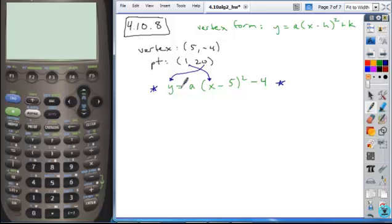So if I took that 20 in for y, leave a because that's what we're solving for, plug in a 1 in for x, and then solve this. So we add 4 to both sides to isolate the expression containing the variable.